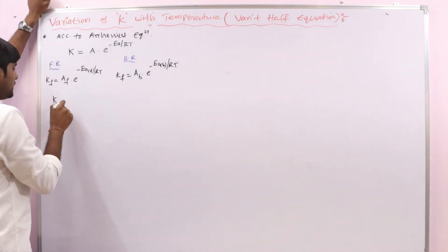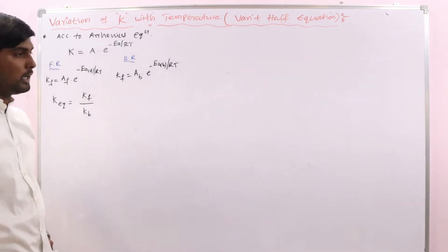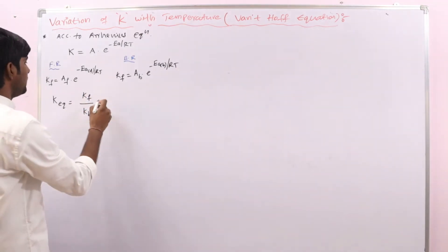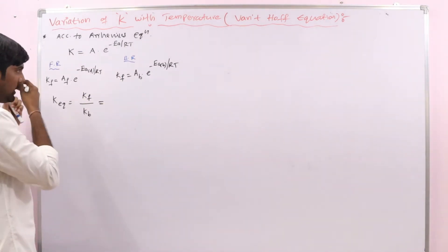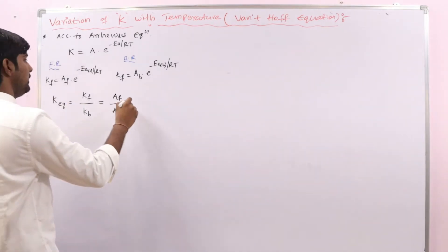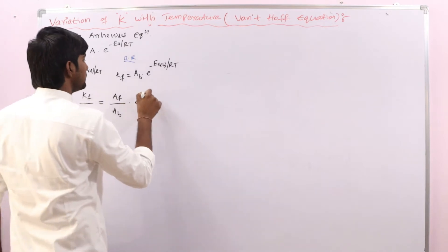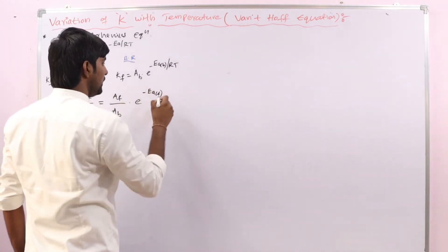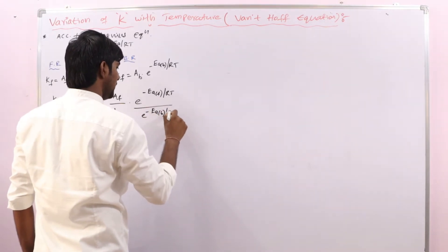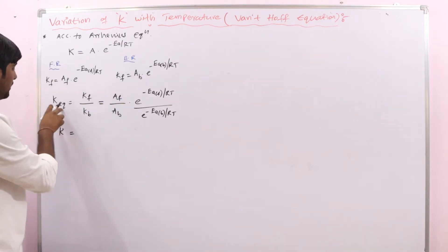We know that the equilibrium constant equals the forward reaction rate constant divided by the backward reaction rate constant, which we already discussed in the derivation of equilibrium constant. If we substitute the two Arrhenius expressions here, we get Af by Ab into the exponential terms. Taking the backward exponential into the numerator, we get the combined expression.